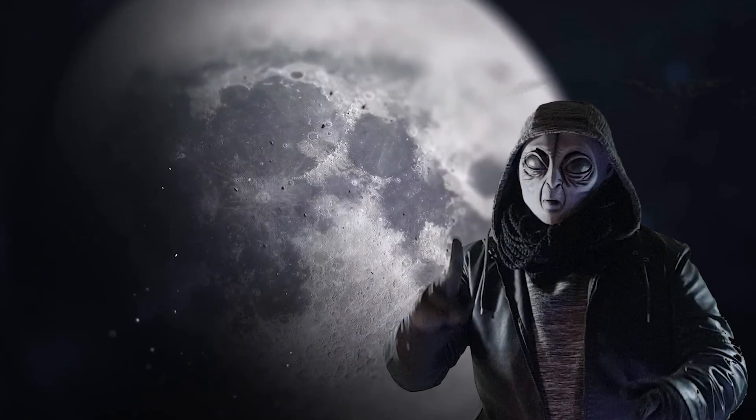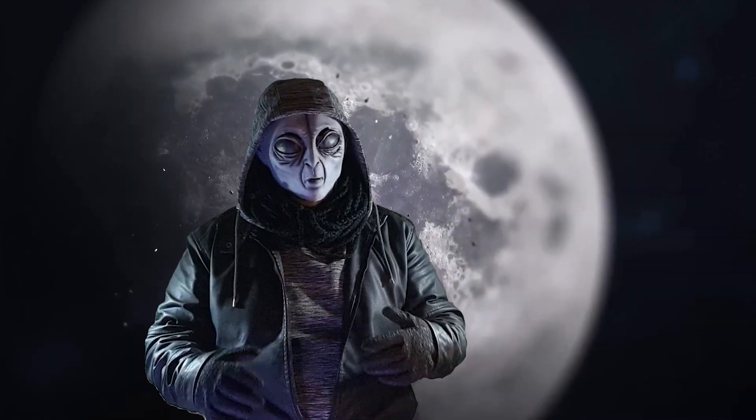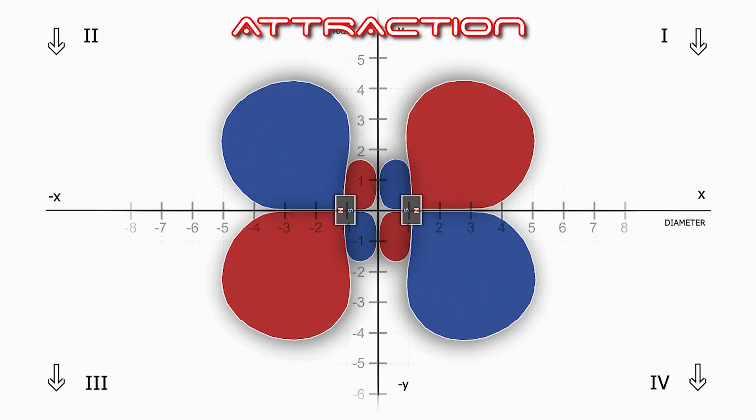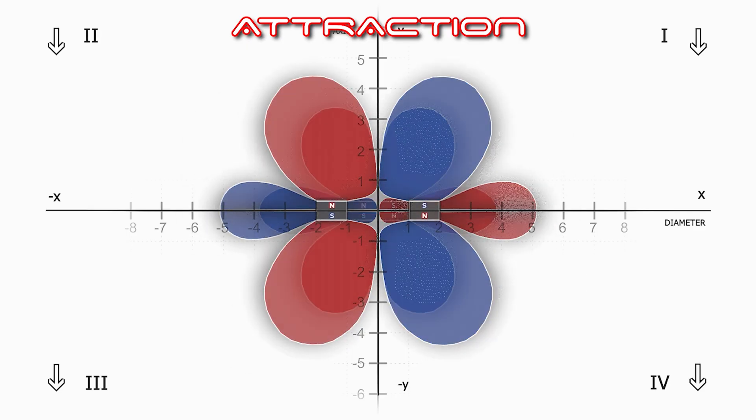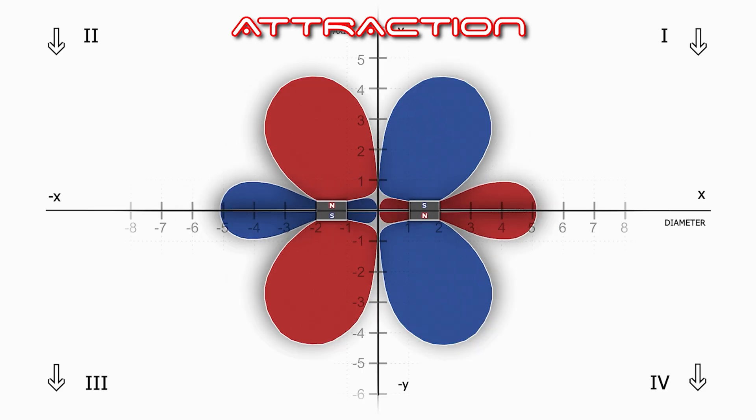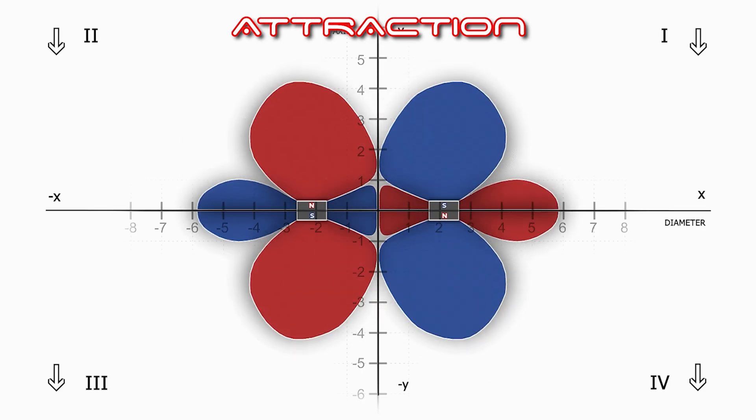I also want to show you two dynamic GIFs Marzio created to visualize how the magnetic field evolves in real time. The first GIF shows two magnets in attraction, first close together, then gradually moving apart, and finally tilting to reveal their attractive faces. Watch how the magnetic bubbles transform dynamically.